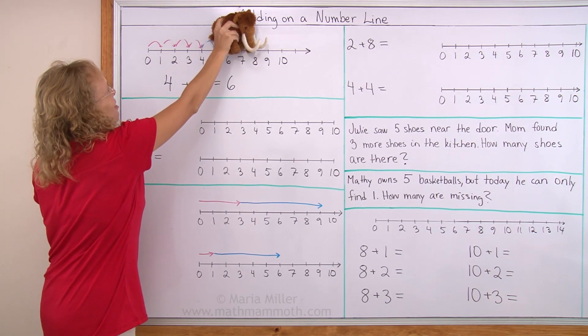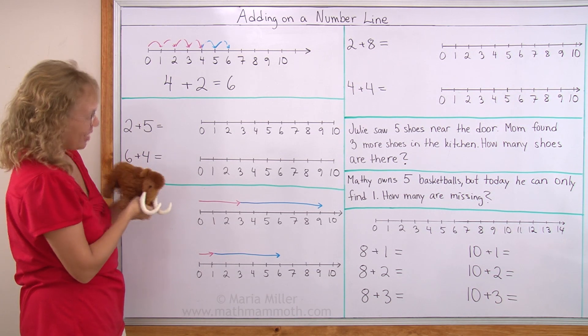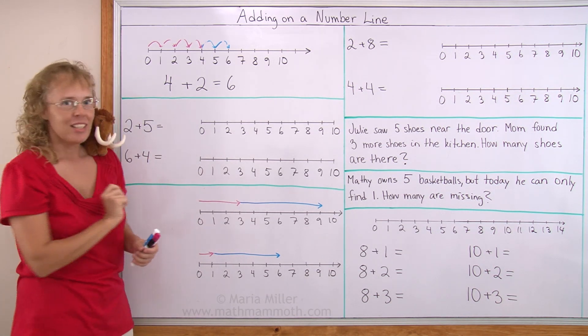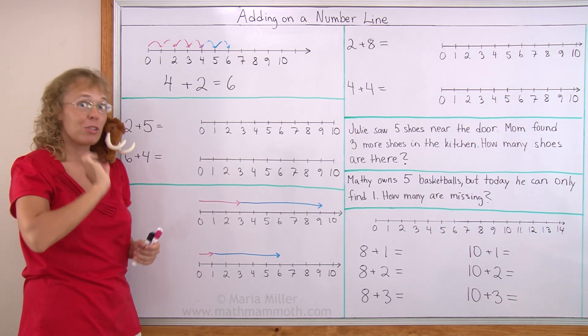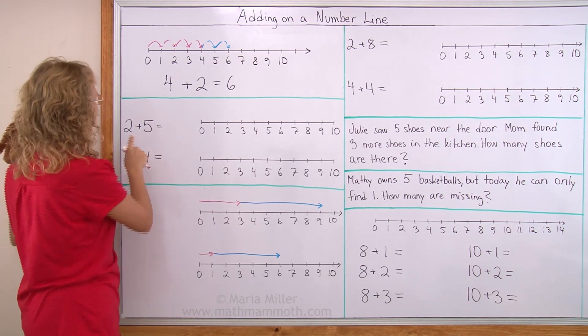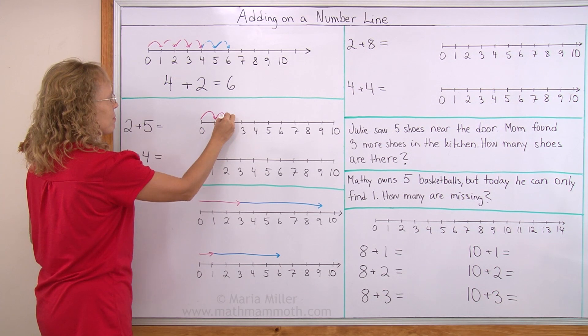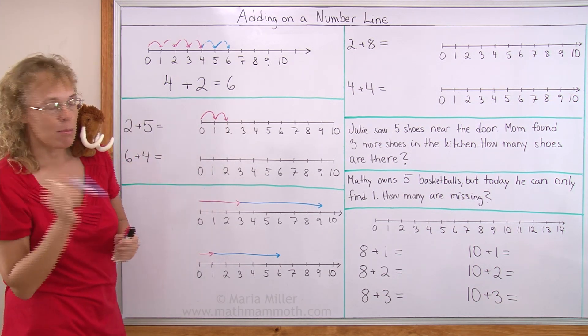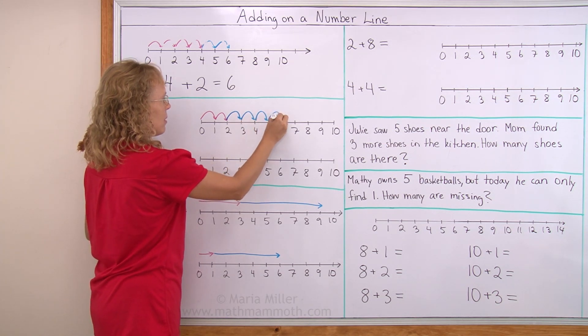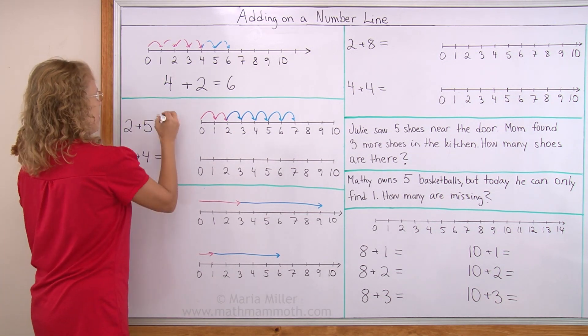You're erasing my arrows, Matthew. Okay. Let's go here. 2 plus 5 and draw the arrows for Matthew or rabbit or cricket to jump on the number line. 2 means first I draw 2 jumps. 5 means I draw 5 more jumps. And where are we? We are at 7. So that's the answer, 7.